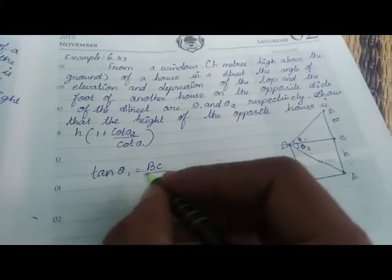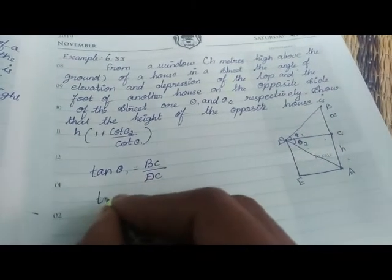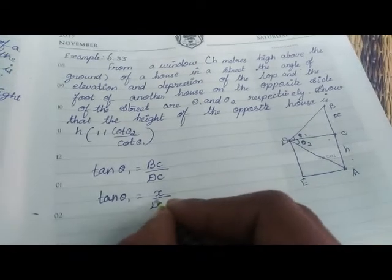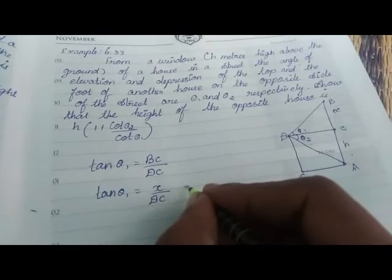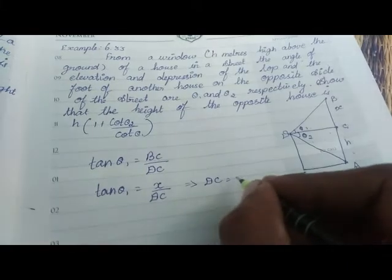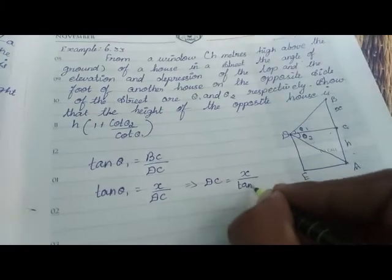So BC is x. Tan theta1 is equal to x divided by DC. That implies DC is equal to x divided by tan theta1.